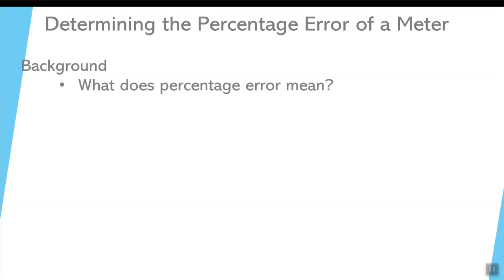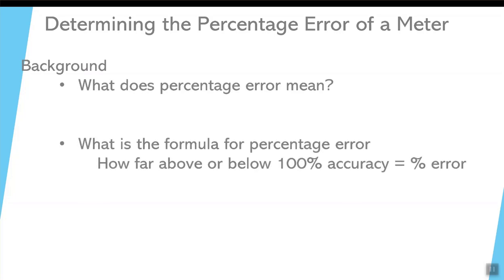So that's our background. We want to find out what percentage error means. The formula for percentage error is relatively simple. It's the difference from what you know is perfectly true to what your meter is saying. If your meter is saying more than what you know is true, then it's a positive percentage error. If the meter is less than what you know is true, then it's a negative percentage error.